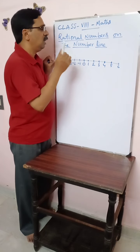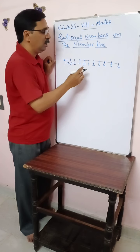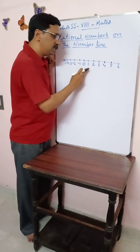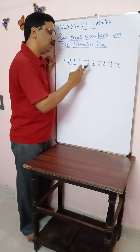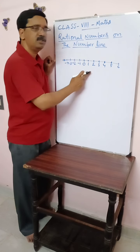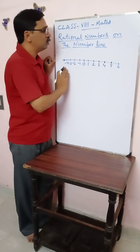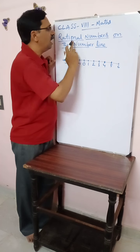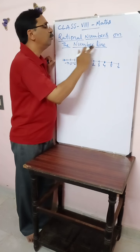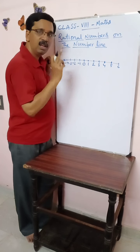As you know, every integer is a rational number, every whole number is a rational number, every natural number is a rational number. So rational numbers can be represented on the number line.